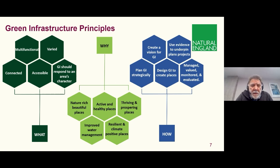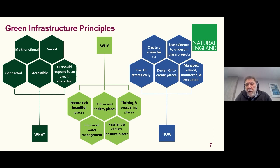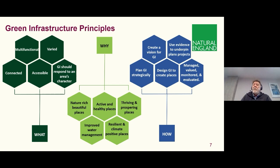Then we need to get into what we're aiming for. Multifunctionality is really a big deal now and something perhaps in the past has been overlooked. We want variety, we want connectivity — not only for people, but for wildlife. Accessibility is important; people need to be able to get to these places, they need to be on their doorstep as well. It's about landscape and local character. Then how we go about this is very much about having strategies, good mapping, working with people to create a vision and referring to the evidence. It's really important that we think before we create about how places are going to be looked after in the long term, how they're going to be nurtured, monitored, and how we're going to evaluate what we've done to learn lessons from it.